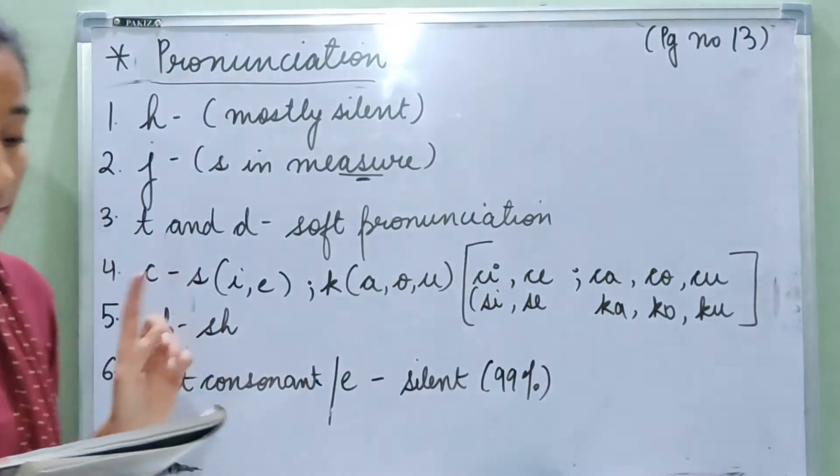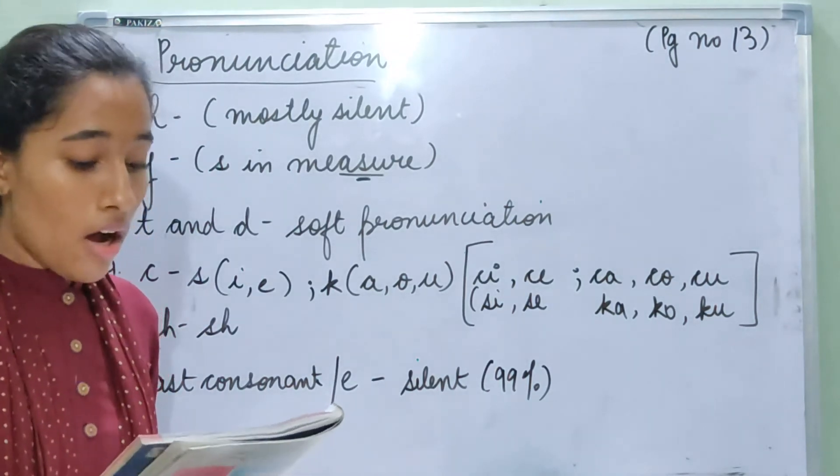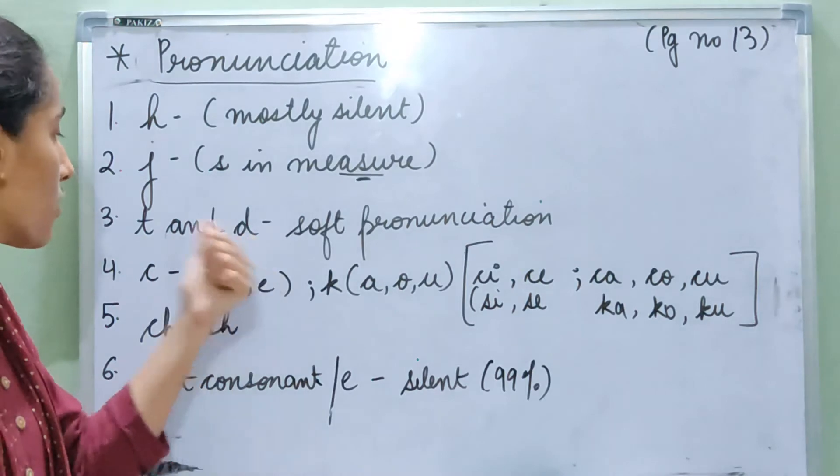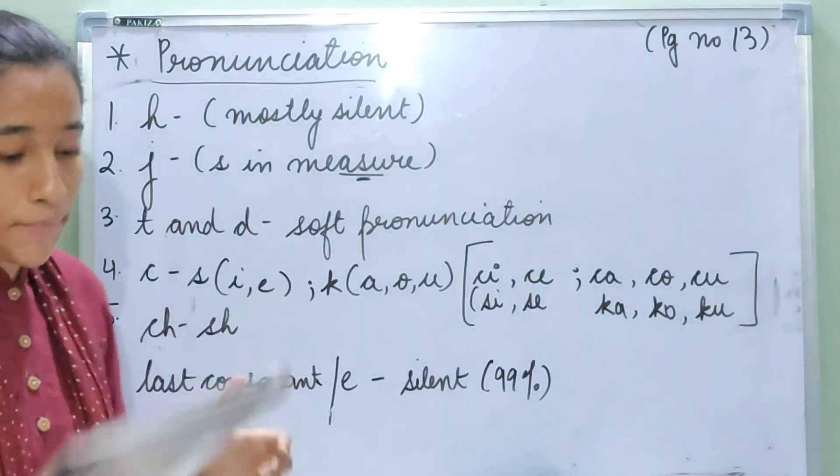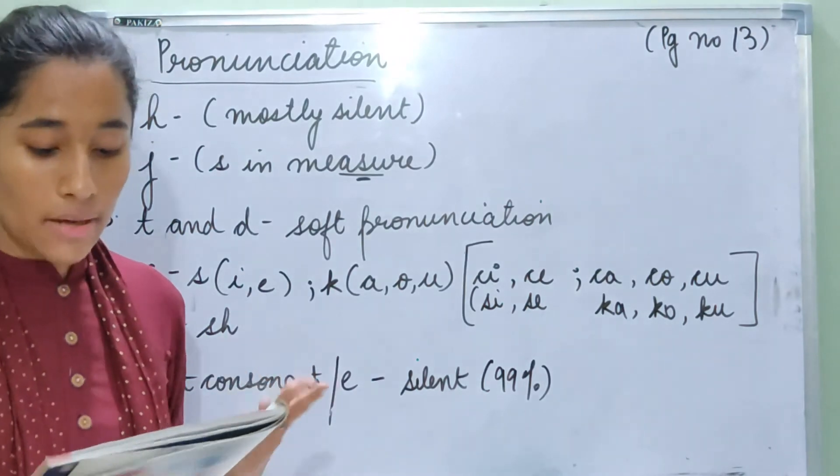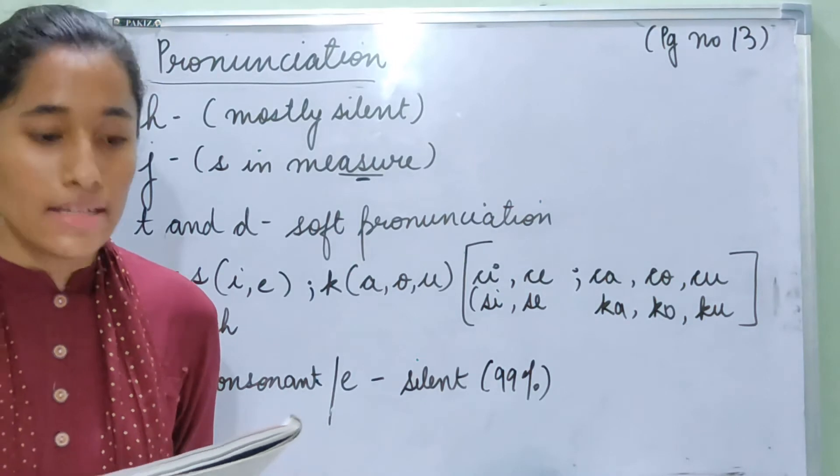Third is letters T and D have a soft pronunciation. Unlike in English we pronounce them as T and D. For example, tube, that is you, tomate, table, disc, dinner, difficile, difficult.